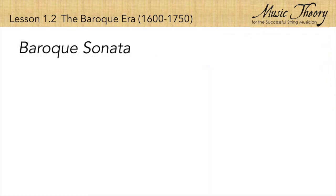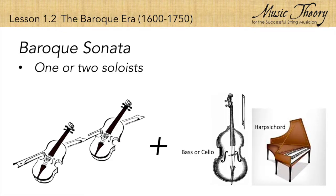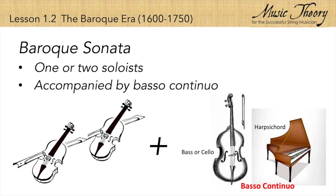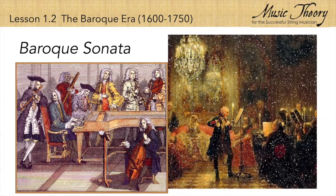As string instruments evolved, new music was written to feature the instruments themselves. The sonata is an instrumental work for one or two soloists who are accompanied by a cello or a bass and a harpsichord. This two-part accompaniment is called a basso continuo, and it was present in nearly all music during the Baroque era.